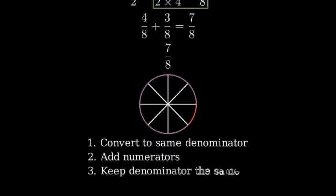And there we have it! We've added 1 half and 3 eighths by first converting 1 half to 4 eighths, then adding 4 eighths plus 3 eighths to get 7 eighths.